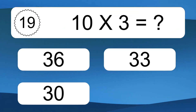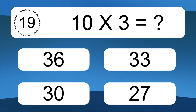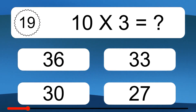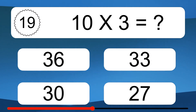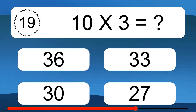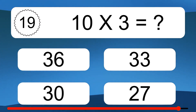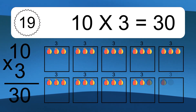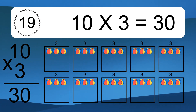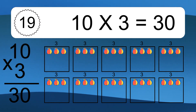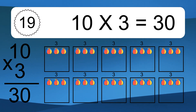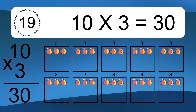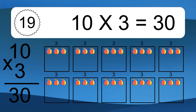10 times 3 equals what? 10 times 3 equals 30. We have 10 boxes, and each box has 3 colorful balls inside. If you count all the balls in all the boxes together, you will have 10 times 3 balls. This equals 30 balls.